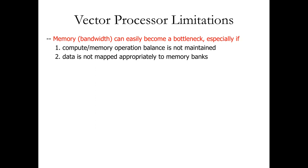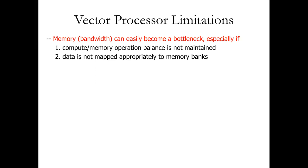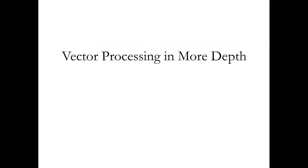Memory bandwidth becomes a problem because we're fetching one instruction and telling it to operate on a bunch of data — we have to get that data into the processor and that takes time, as main memory is slow. We want to maintain balance between compute — the actual work on the CPU — and the memory bandwidth requirement. One thing that can help is being smart about how we interleave our banks.